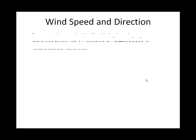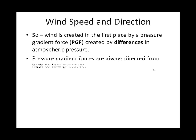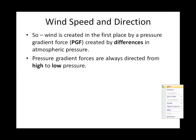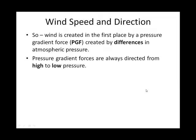Just to recap: a common exam question is what creates horizontal wind in the first place? If this is the Earth's surface, for one of three reasons we talked about, we have a high pressure and a low pressure, and air will want to move from that high to that low pressure. As air moves, we call that wind.